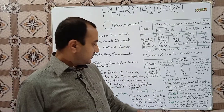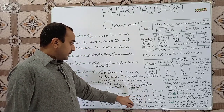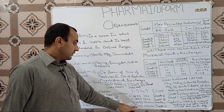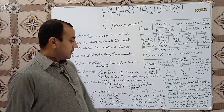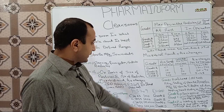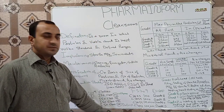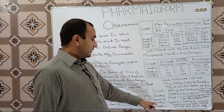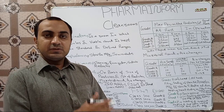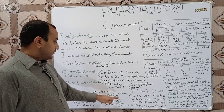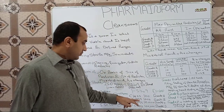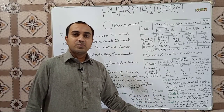If we take the FS 209 standard, it classifies clean rooms using a numbering system: Class 100, Class 1,000, Class 10,000, and Class 100,000. The EU or European GMP classification system classifies clean rooms into a grading system: Grade A, Grade B, Grade C, and Grade D.